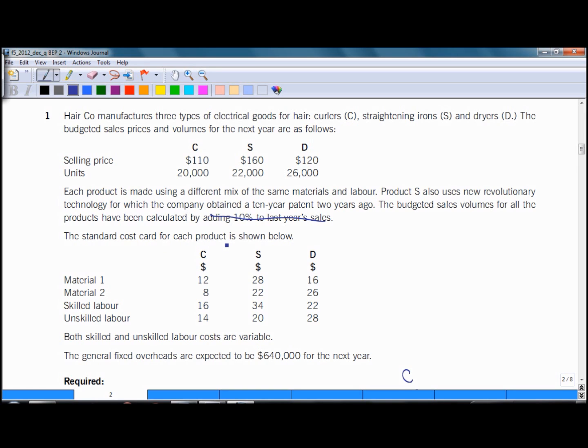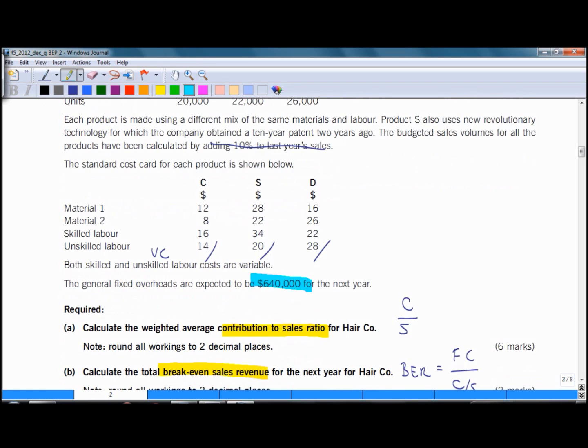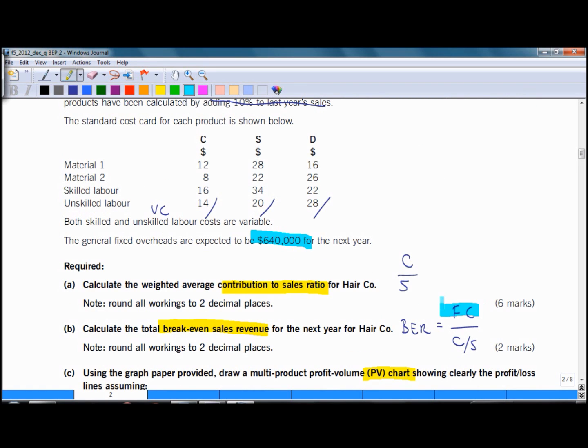The standard cost card for each product is shown below. What we have is material 1, 2, labor skilled and unskilled. Both of the labor costs are variable. So based on this we can calculate our contribution. What we need to do is add up the costs, these are variable costs, and subtract from the selling price and we get the contribution. The general fixed overheads are expected to be 640,000. That will be needed for your calculation of break even revenue.